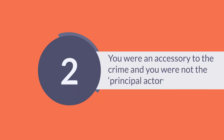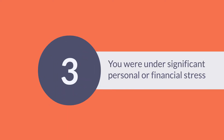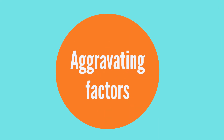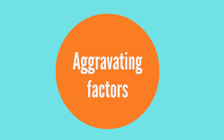Second, you were an accessory to the crime and you were not the principal actor. Third, you were under significant personal or financial stress. Fourth, you were found guilty of a non-violent crime. The opposite of mitigating circumstances are called aggravating circumstances, and these may persuade the judge to increase the severity of your punishment.